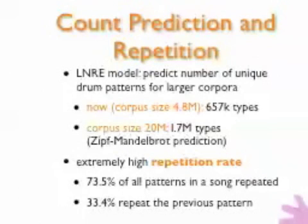The Large Number of Rare Events model allows us to predict the number of unique drum patterns for large corpora. We have a corpus size of 4.8 million bars with 657,000 types — that is, unique drum patterns. Using the LNRE model, specifically the Zipf-Mandelbrot model, we can predict that if we collected 20 million bars, we would expect approximately 1.7 million unique types. So the number of unique patterns keeps growing, which is very similar to language.